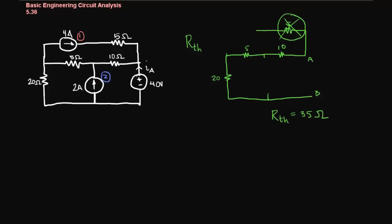Next let's solve for our Thevenin voltage. We'll do that by looking at each source as if it were acting alone in the circuit. So we'll start with our source 1 up here.